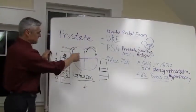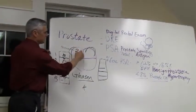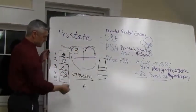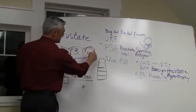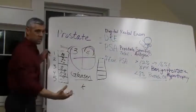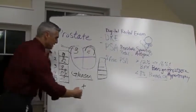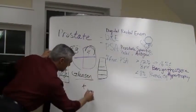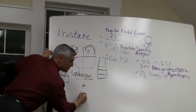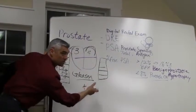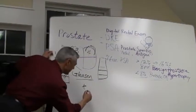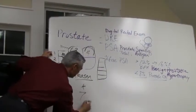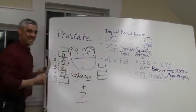So let's say one side is graded as a 3 and the other side is graded as a 4 — then our Gleason score would be 3 plus 4, which equals 7.